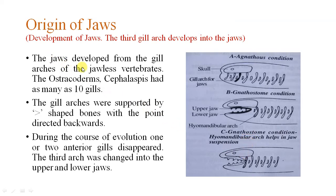The jaws developed from the gill arches of the jawless vertebrates. The ostracoderms and cephalaspids had as many as 10 gills. The gill arches were supported by such shaped bones with the point directed backwards. During the course of evolution, one or two entire gills disappeared, and the third arch changed into the upper and lower jaws.